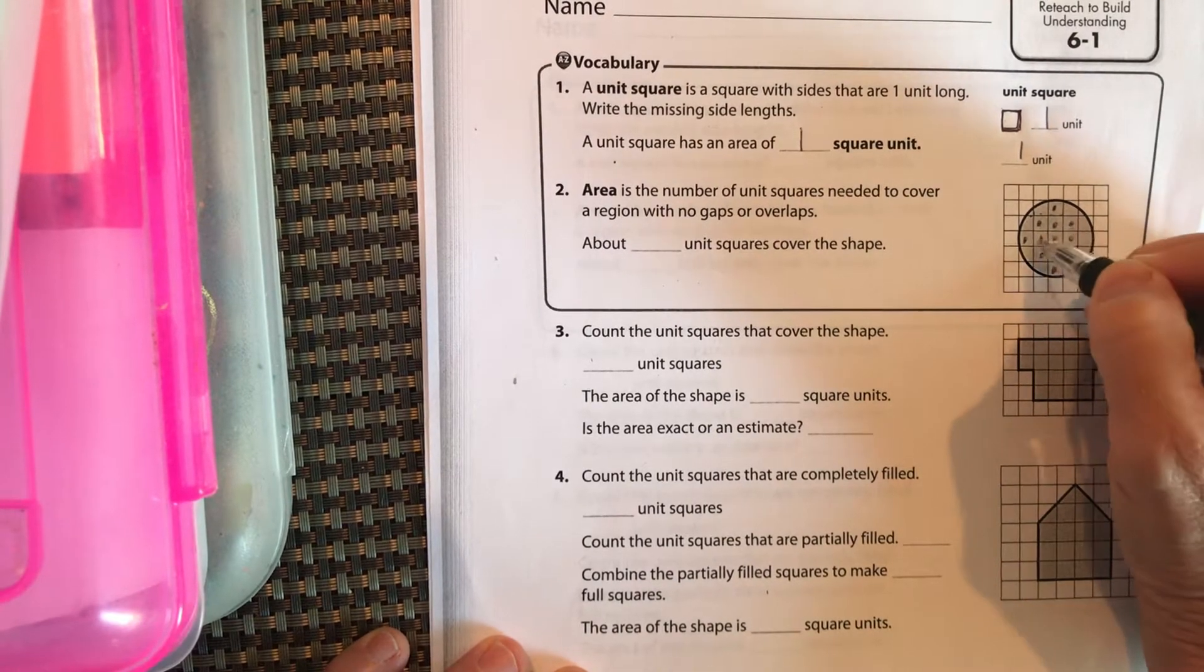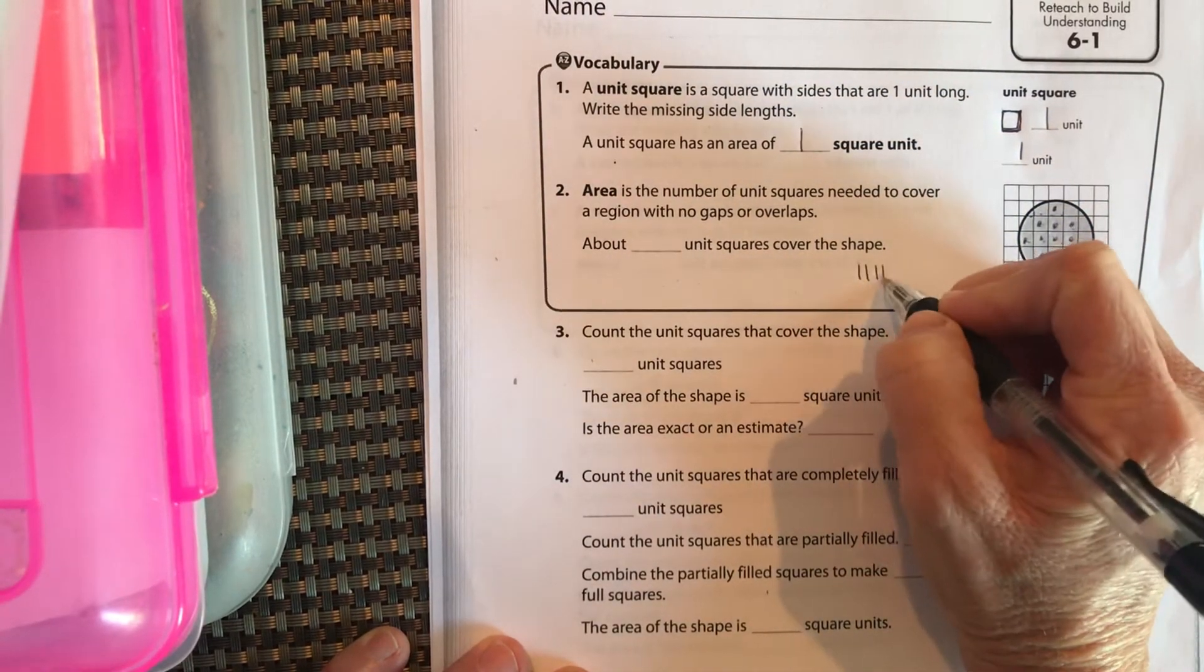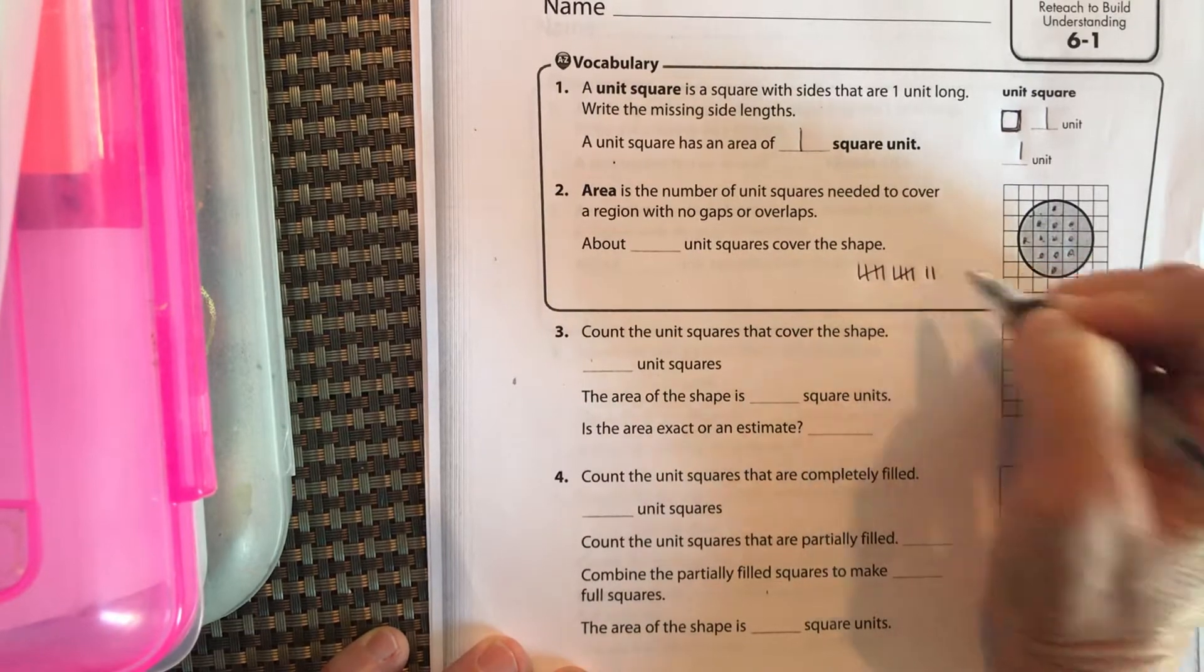So 1, 2, 3, 4, 5, 6, 7, 8, 9, 10, 11, 12. So I'm going to make tally marks for those. 11, 12.